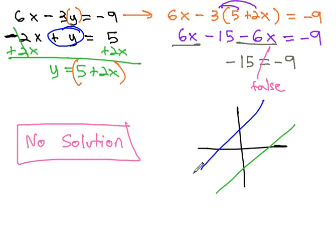If we get a false statement, there's no solution. If we get a true statement, there's infinite solutions, or what normally happens is we'll find an x-y pair.